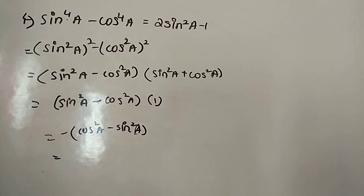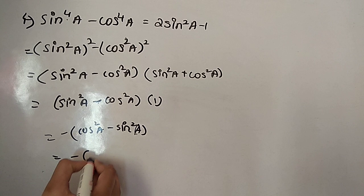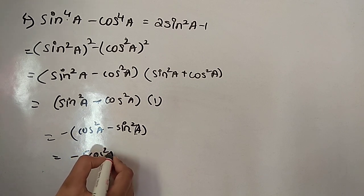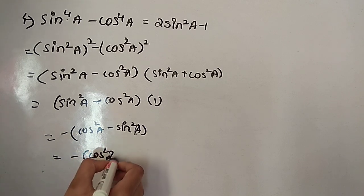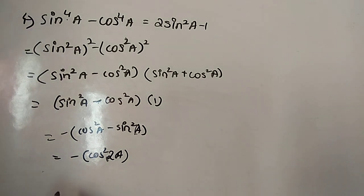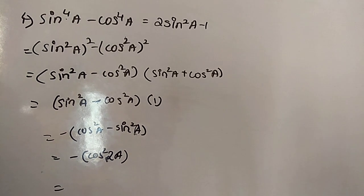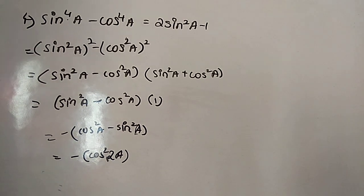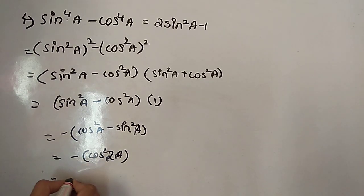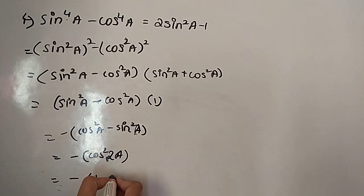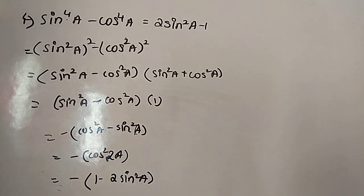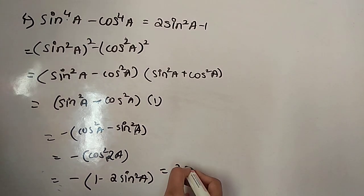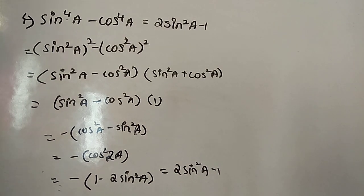Now, cos squared a minus sin squared a equals cos 2a. Taking minus as common, sin squared a minus cos squared a becomes minus(cos squared a minus sin squared a). We can write this as minus(1 minus 2 sin squared a), which equals 2 sin squared a minus 1. That matches the RHS, so it is proved.